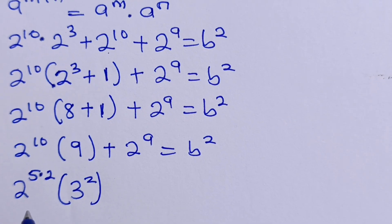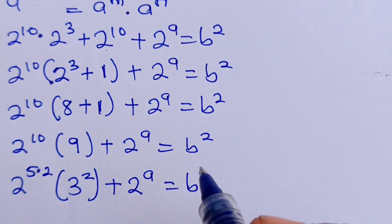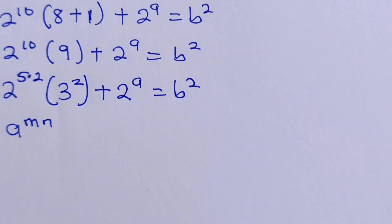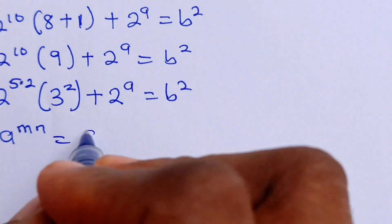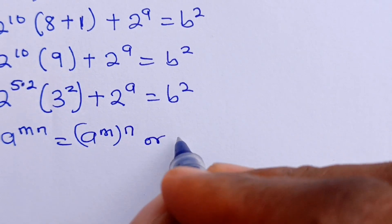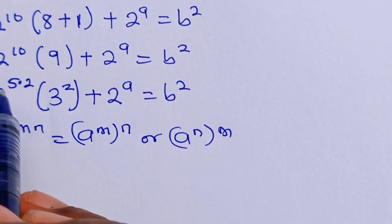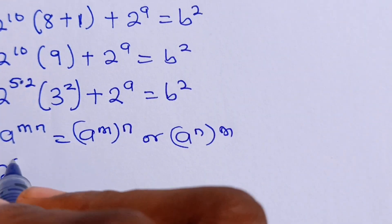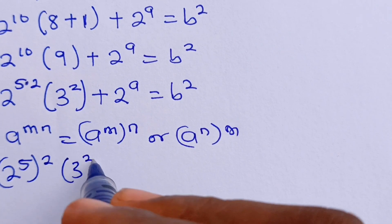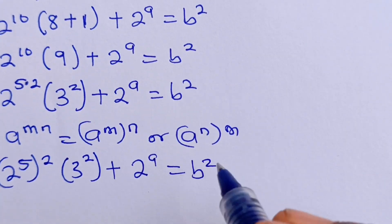At this point I want to get the difference of 2 squares, plus 2 to the power of A is equal to B squared. Now, when you have A to the power of M times N, that is equal to A to the power of M multiplied by A to the power of N. So that means we can write this as 2 to the power of 5 raised to the power of 2, multiplied by 3 to the power of 2, plus 2 to the power of A is equal to B squared.